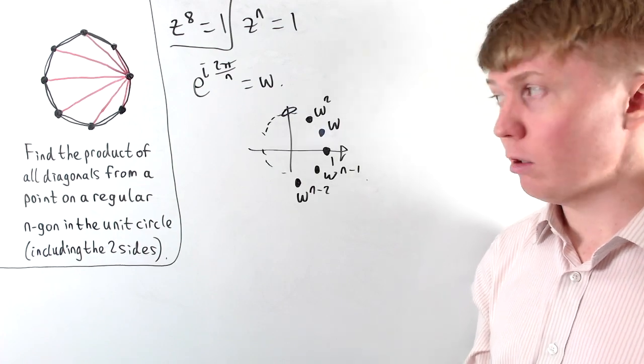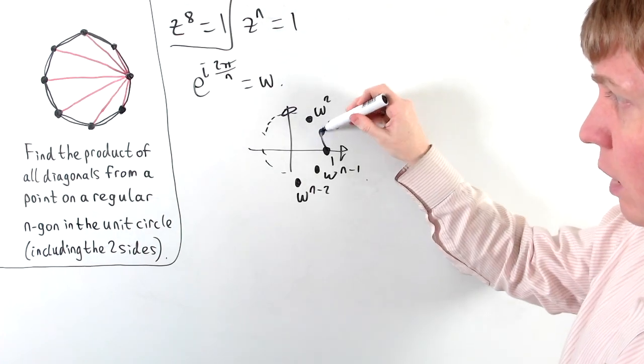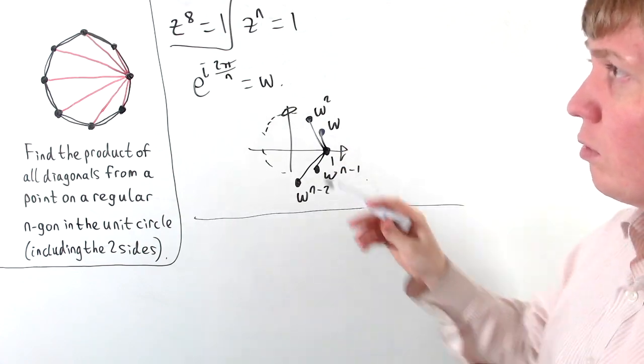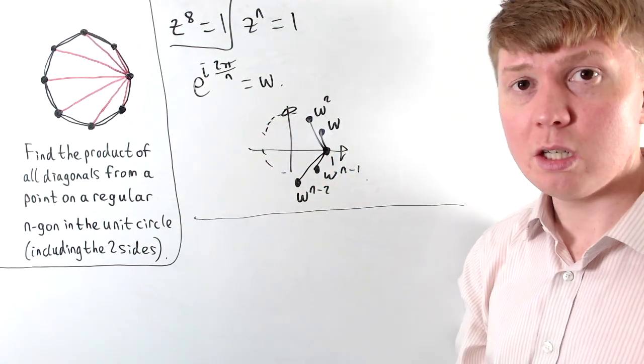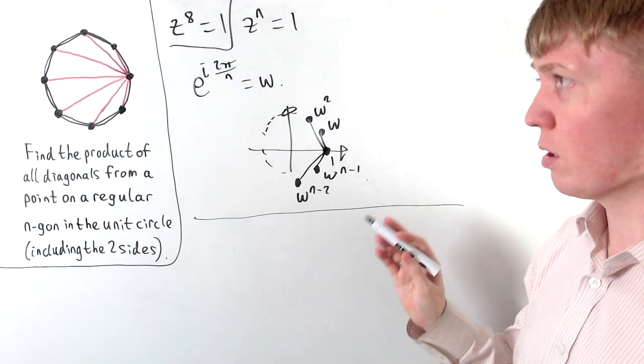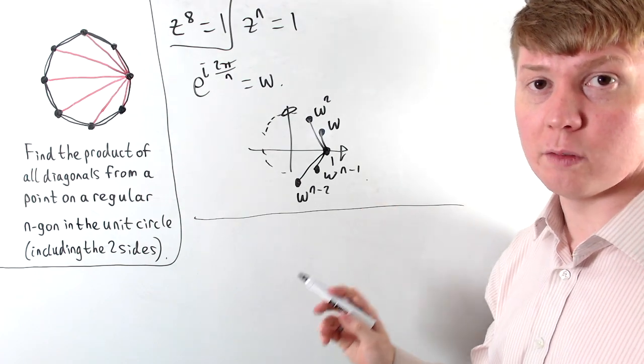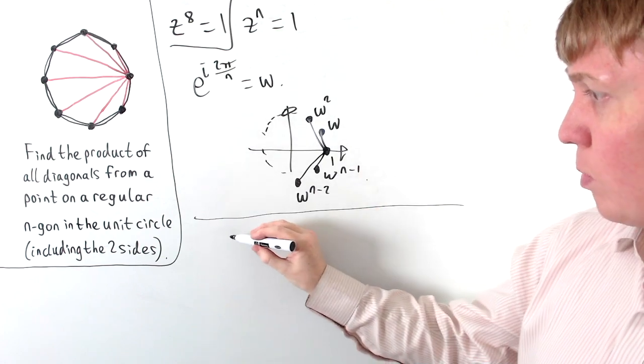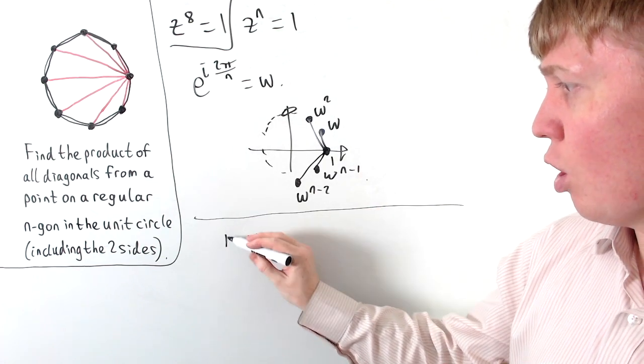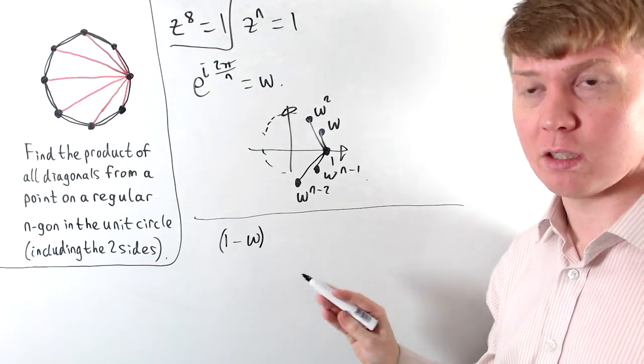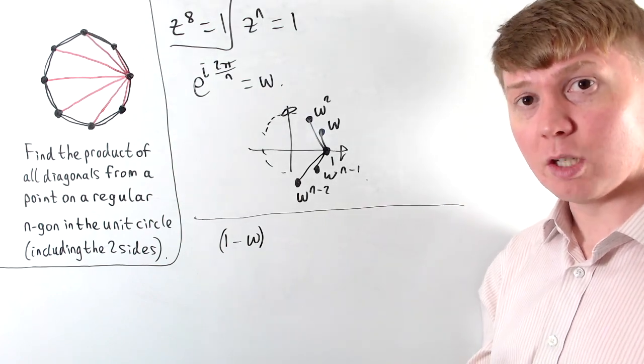So now we can work out our distances by referring to this picture here. So we can actually do this as, rather than thinking of it as distances in 2D, we can think about this as the modulus of the difference between two complex numbers. Now remember, we're taking the product of all of these, so we need to multiply all of this together. So our first length would just be the distance from 1 to omega, and then we'll take the modulus of this whole product at the end, rather than taking the modulus of each individual term.